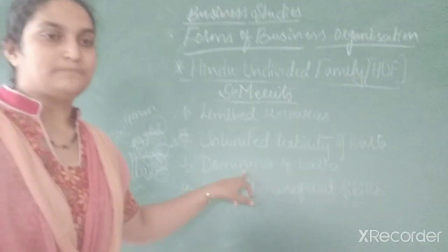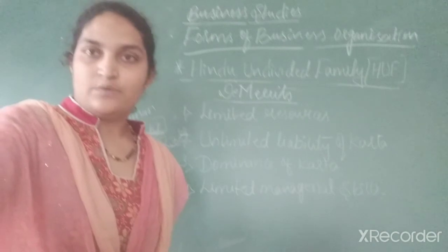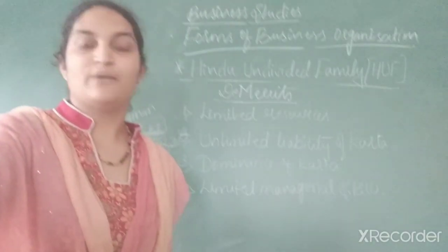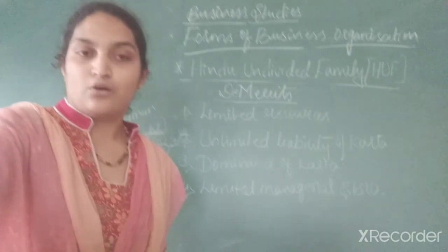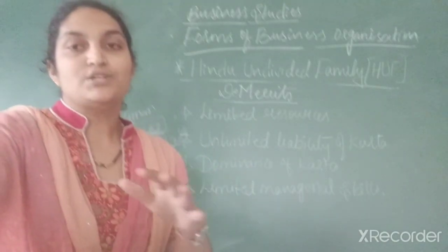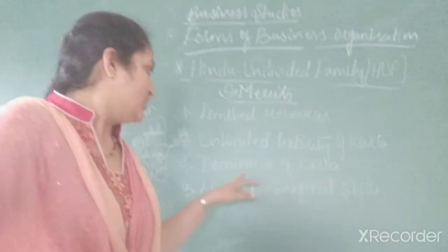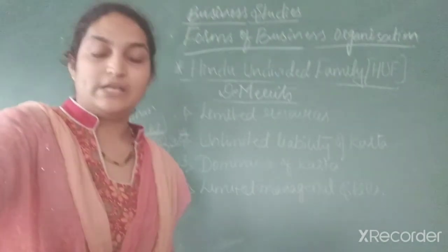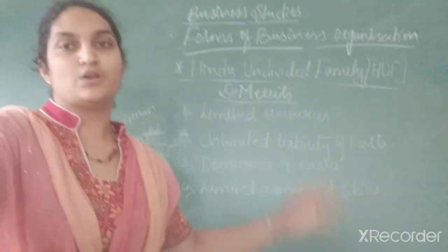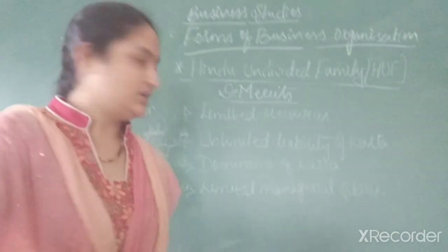Next limitation is dominance of Karta. The Karta individually manages the business, which many times is not acceptable by the other members of the family. This may cause conflicts among them. Because of this misunderstanding and conflict, it leads to the breakdown of the family unit. That is what the dominance of Karta means as a limitation.